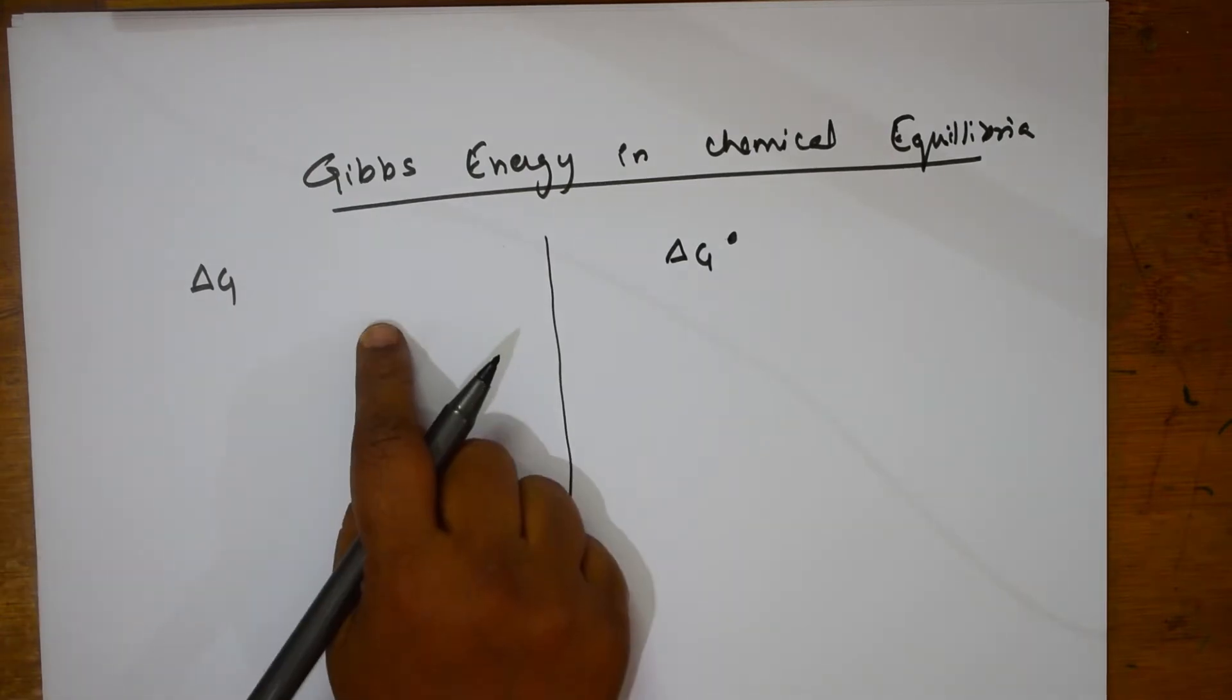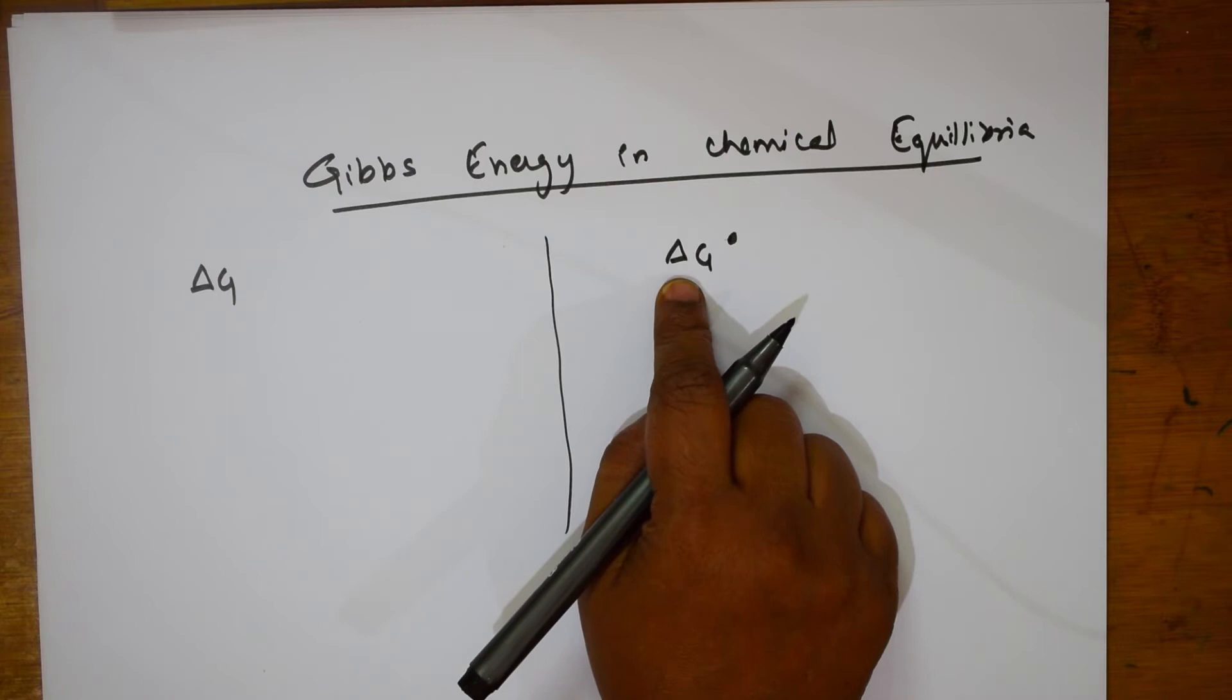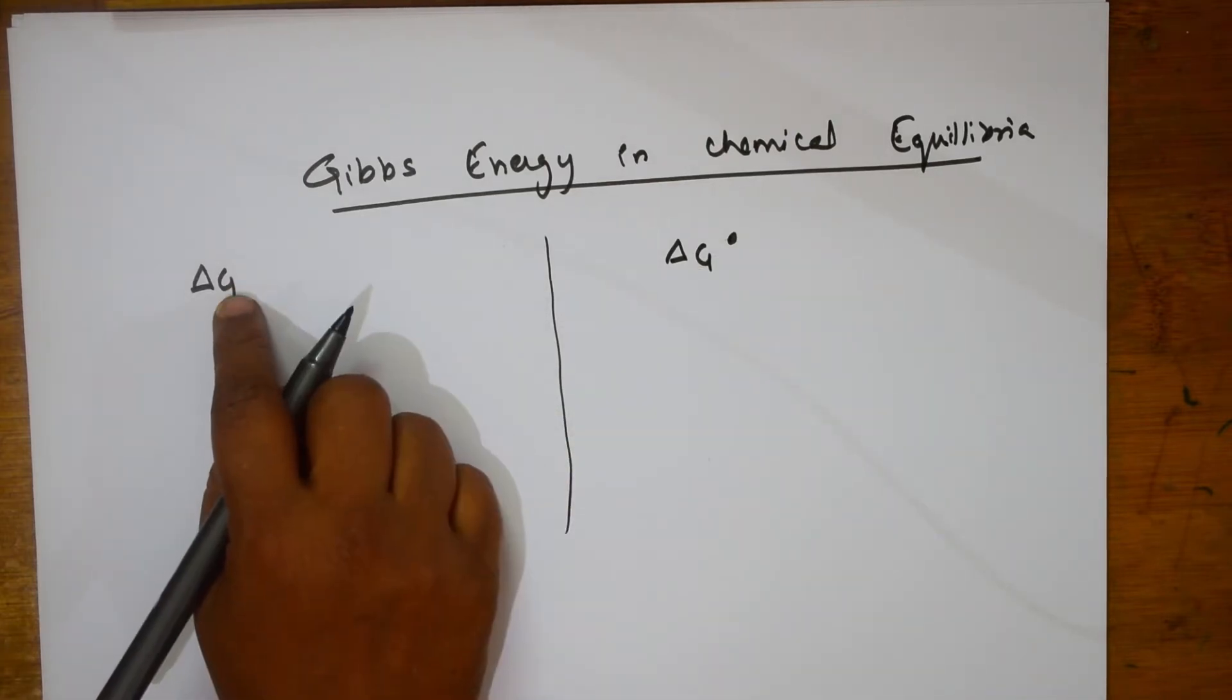What is Delta G? Delta G is change in Gibbs Energy. What is Delta G naught? Delta G naught is the standard Gibbs free energy change. This is standard Gibbs free energy change; this is change in Gibbs free energy.